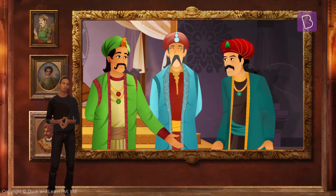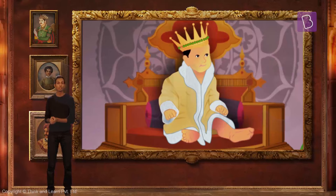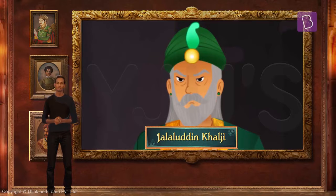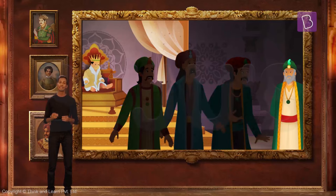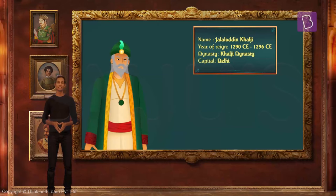The Mamluk nobles had appointed an infant sultan in order to control power. But an officer named Jalaluddin had other plans. The nobles tried to kill Jalaluddin, but he survived and had them killed instead. And so Jalaluddin Khilji came to power at 70 years old. He was considered to be a mild-mannered and kind ruler.